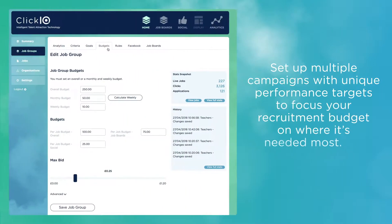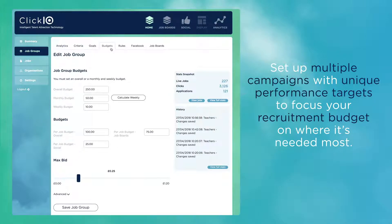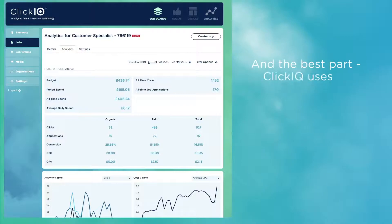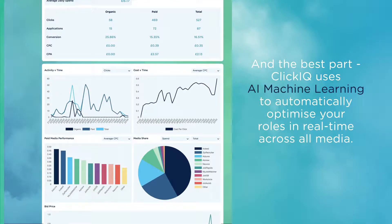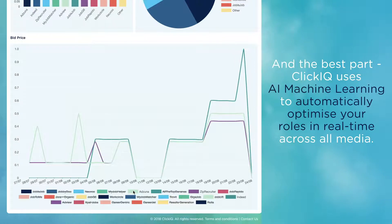Set up multiple campaigns with unique performance targets to focus your recruitment budget on where it's needed most. And the best part, ClickIQ uses AI machine learning to automatically optimise your roles in real time across all media.